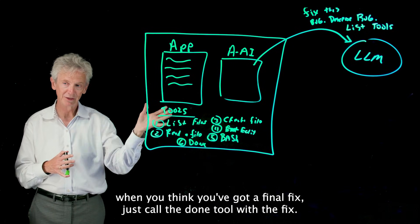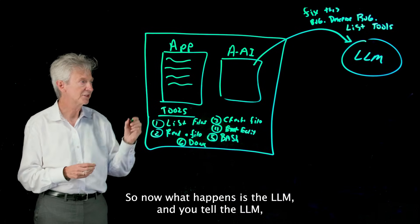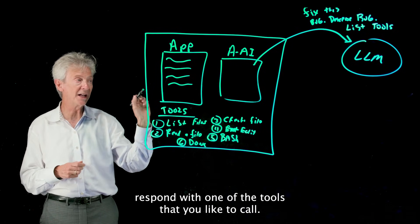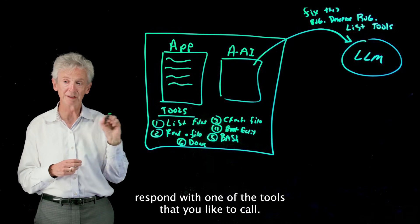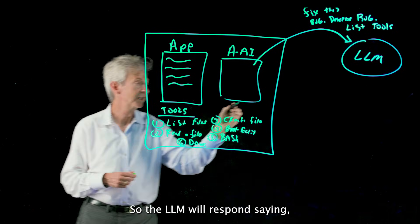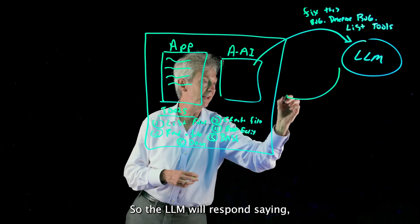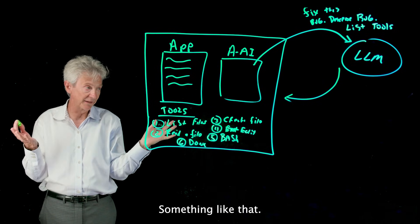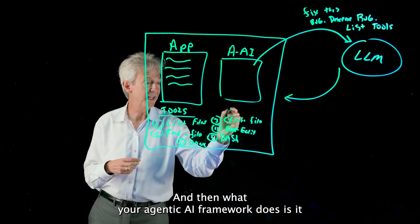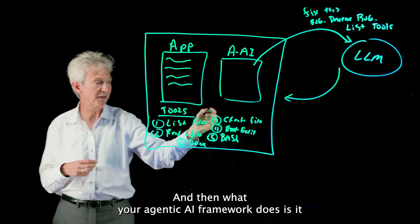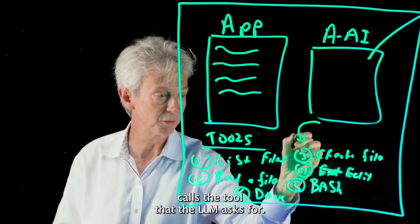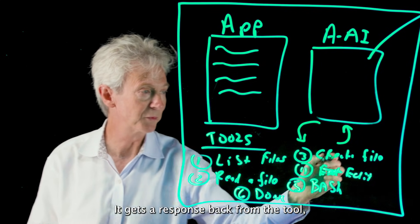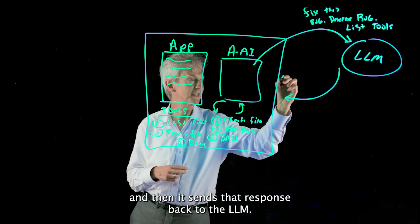Okay, so now what happens is the LLM—and you tell the LLM respond with one of the tools that you'd like to call—so the LLM will respond saying, 'I want to list the files in the directory,' something like that. And then what your agentic AI framework does is it calls the tool that the LLM asked for, it gets a response back from the tool, and then it sends that response back to the LLM.